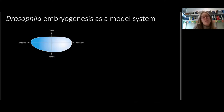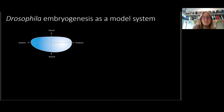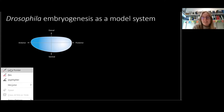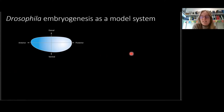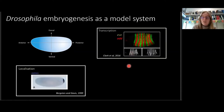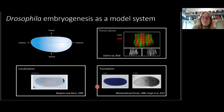In the Ash lab, we use the early specification of Drosophila embryos as a model to understand how gene expression is regulated in development. This is a really well-studied model system with multiple examples of key patterning genes having their expression restricted to discrete domains through the control of transcription, through the localisation of an mRNA product, and through the restriction of translation.